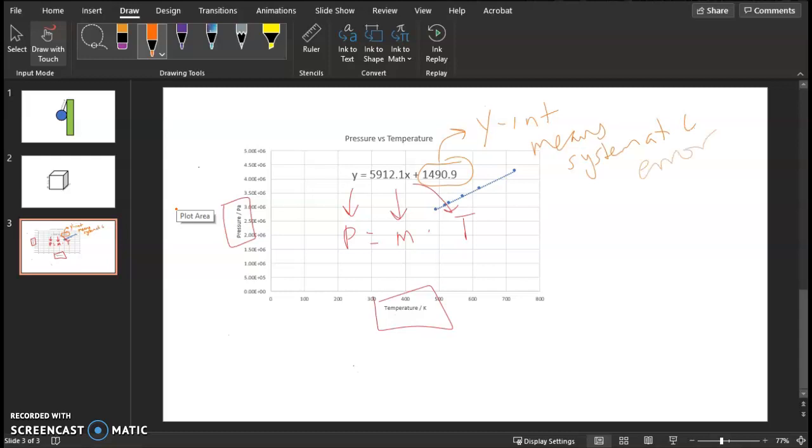Systematic error occurs when you have uncalibrated instruments. It's really hard to detect. But if you do your IA and you should have a directly proportional relationship between your independent and dependent variable, and you end up with a y-intercept, it means you have some systematic error. We will ignore the y-intercept in this experiment.